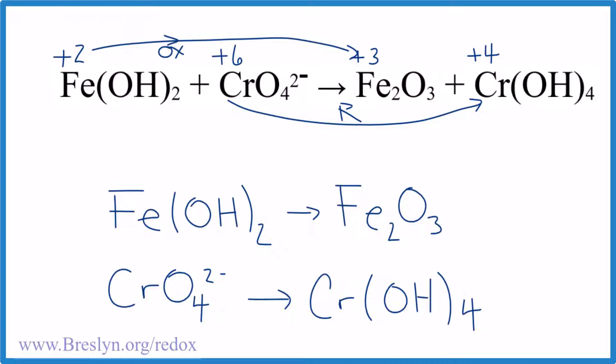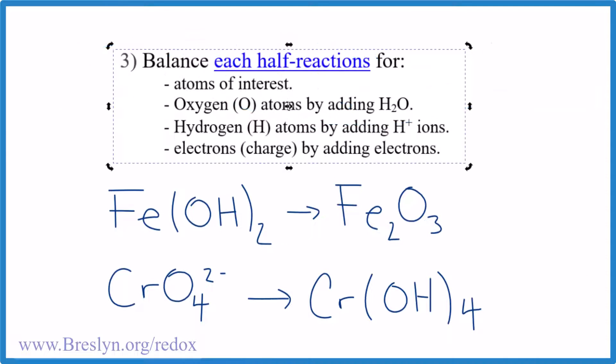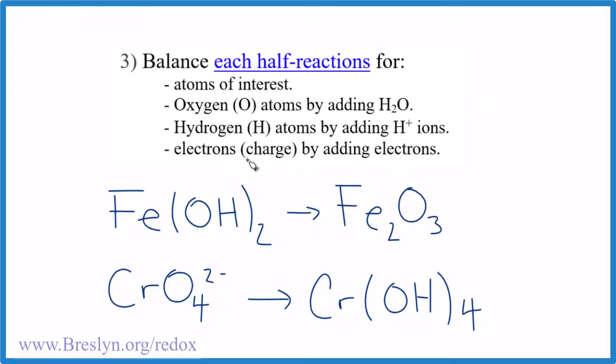Now what we need to do is we need to balance each half reaction. So to do this, we're first going to balance the atoms of interest. Those are the ones that oxidation numbers changed for. One iron and two, so we've got to put a two here. Then down here, chromium and chromium, that's already balanced.